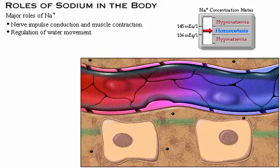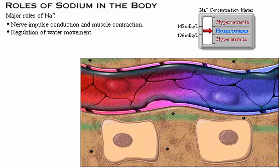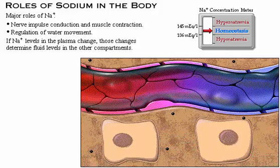In addition to playing a pivotal role in nerve impulse conduction and muscle contraction as the major extracellular positive ion, sodium is the primary regulator of water movement in the body because water follows sodium by osmosis. If sodium levels in the plasma change, those changes determine fluid levels in the other compartments.